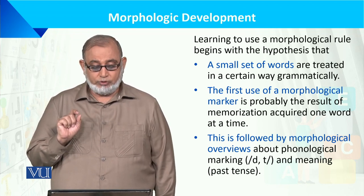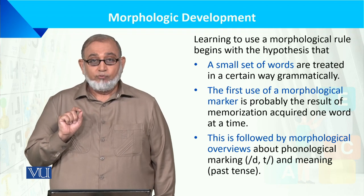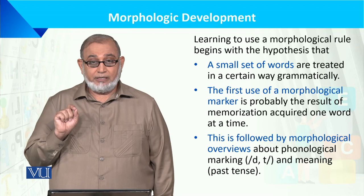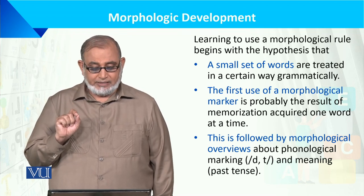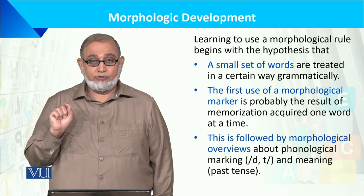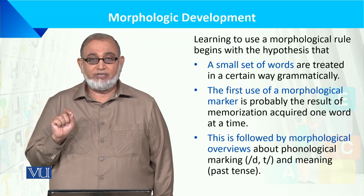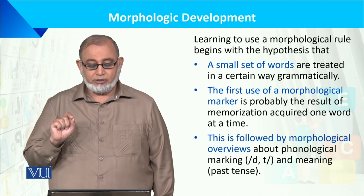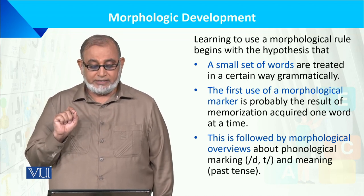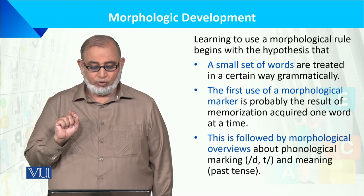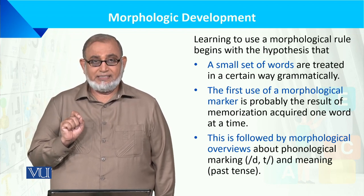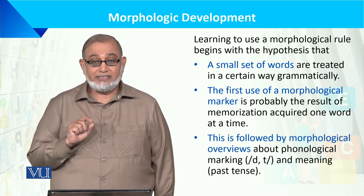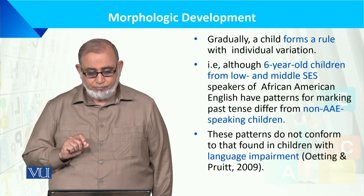The first use of Morphological Markers is probably acquired one word at a time. This is followed by morphological overviews about phonological markers — just data, sounds, and meaning. What does the meaning of the past tense mean?